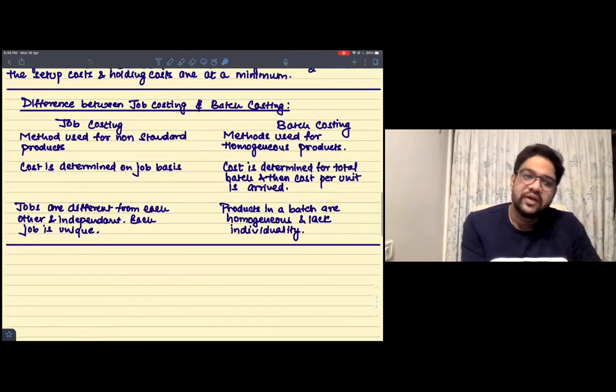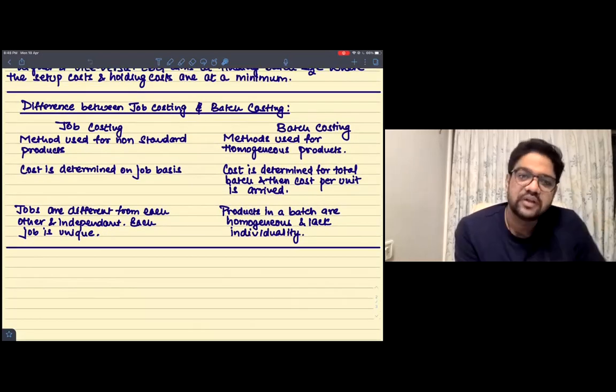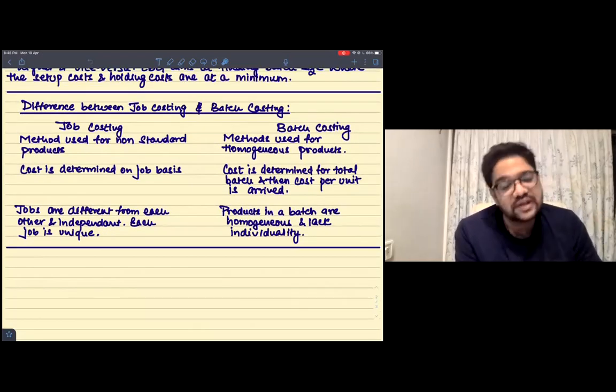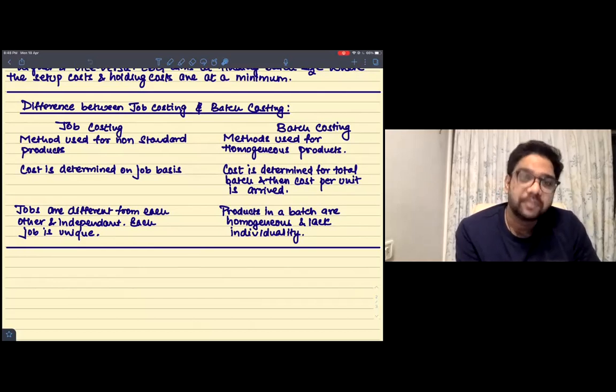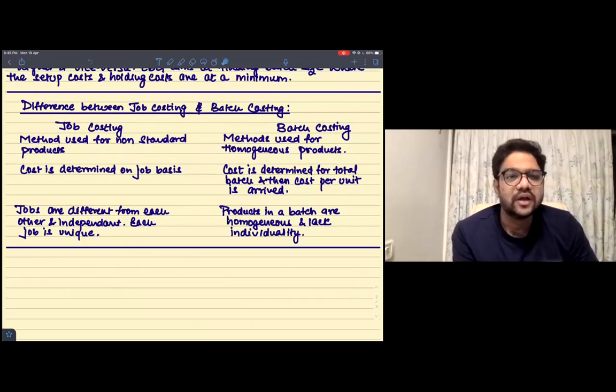And then finally we have the difference between the job and batch costing. Now this is a question that actually can appear in your paper. So under job costing, we use the method for non-standard products. Batch costing, the products are homogeneous—it is the same requirement, right?